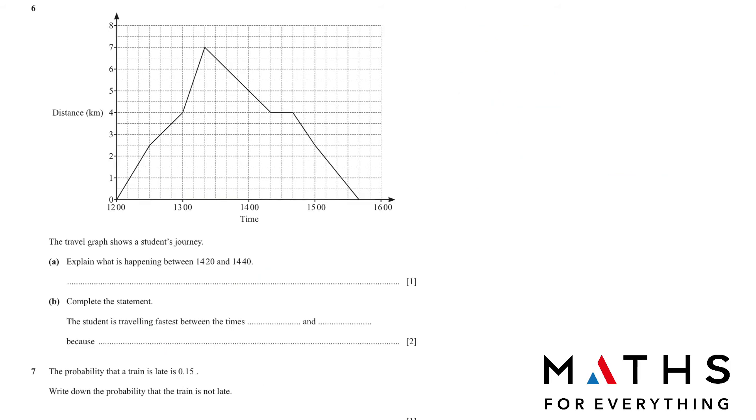Question number 6. We have been given a distance time graph. The travel graph shows a student's journey. This is the time taken, this is the distance. Explain what is happening at 14:20 and 14:40. It's a straight line. That means the student is not moving. The student is stationary. Always a straight line means that.